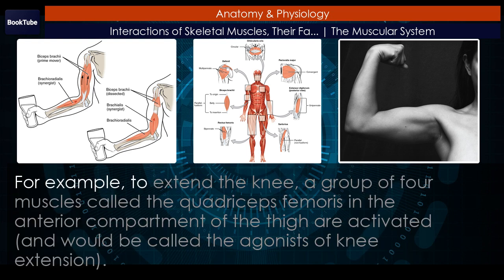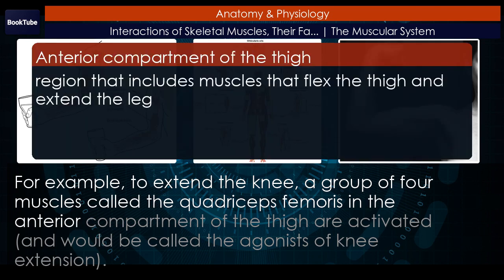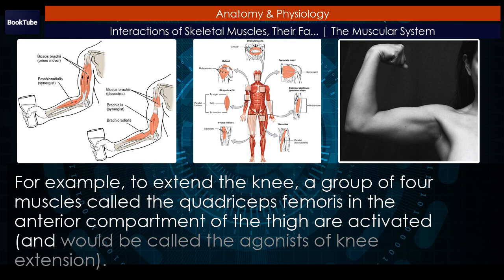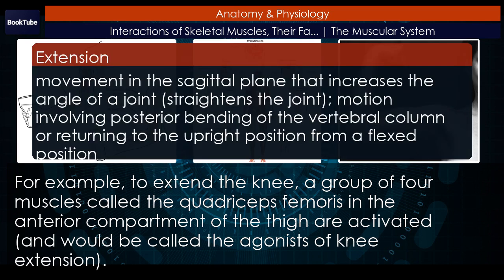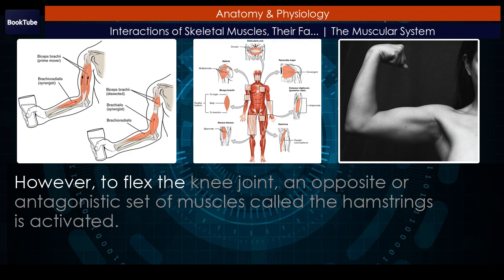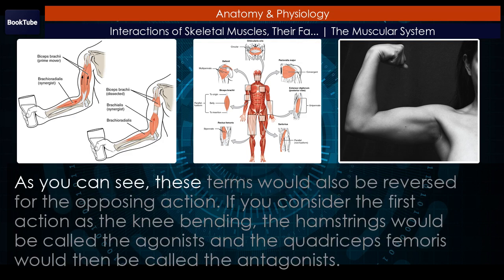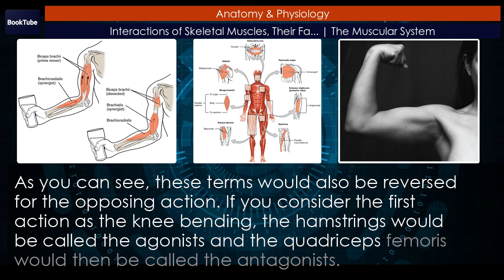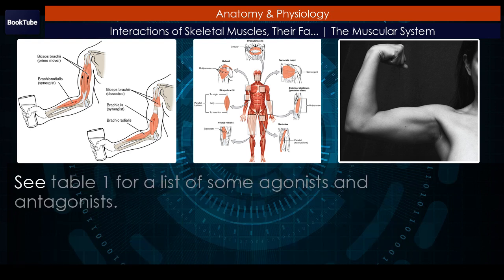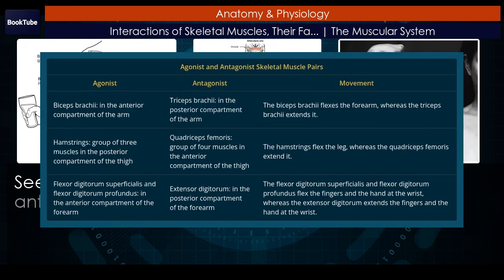For example, to extend the knee, a group of four muscles called the quadriceps femoris in the anterior compartment of the thigh are activated and would be called the agonists of knee extension. However, to flex the knee joint, an opposite or antagonistic set of muscles called the hamstrings is activated. These terms would also be reversed for the opposing action — if the first action is the knee bending, the hamstrings would be called the agonists and the quadriceps femoris would be called the antagonists. See Table 1 for a list of some agonists and antagonists.